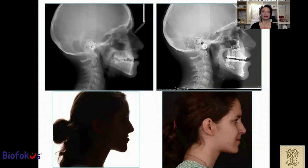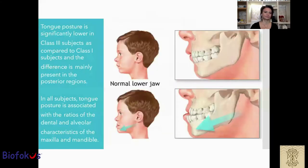Of course, we don't like to send patients to surgery — that's why early treatment is very, very important. Tongue posture is significantly lower in class 3 subjects as compared with class 1 subjects, and the difference is mainly present in the posterior region.